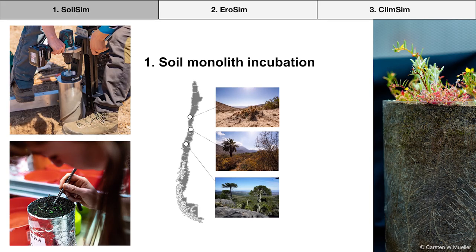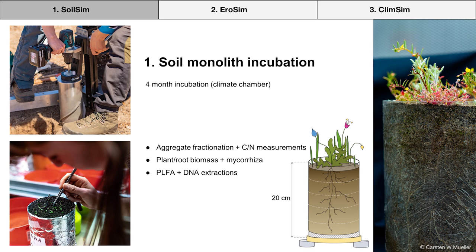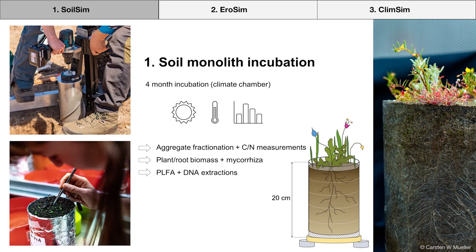For the soil monolith experiment, we collected 30 monoliths from Santa Gracia, La Campana, and Nahuelbuta. These monoliths were incubated for four months in a climate chamber where parameters such as light intensity, photoperiod, humidity, temperature, and CO2 levels were set to resemble the climate of Nahuelbuta. We only worked with inherent seed banks in the cores, meaning that the plants and biocrusts emerged spontaneously. Now that the incubation is finished, we have divided all cores into five depth increments and will next perform analyses such as aggregate fractionation to look into the vertical gradient of aggregate stability and allocation of carbon. We would also like to measure plant and root biomass and mycorrhiza to track plant-microbe interactions, and extract PLFA and DNA to look into the abundance, structure, and functionality of microbial communities.